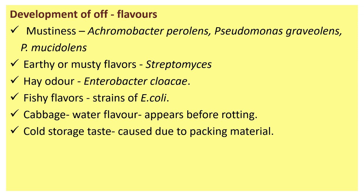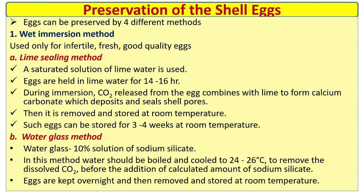Development of off-flavors: mustiness is caused by Achromobacter pyrolans, Pseudomonas graveolens, and Pseudomonas mucicolens. Earthy or musty flavor is caused by Streptomyces, hay odor by Enterobacter cloacae. Fishy flavor by certain strains. Cabbage-water flavor appears before rotting. Cold storage taste is first due to packing material.